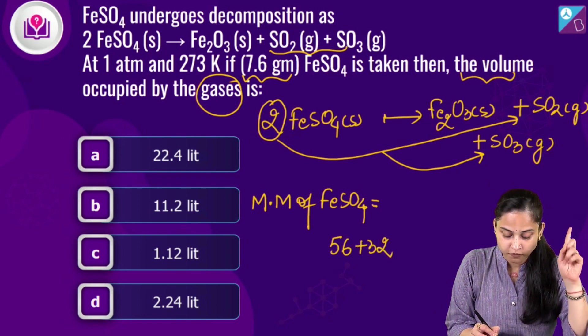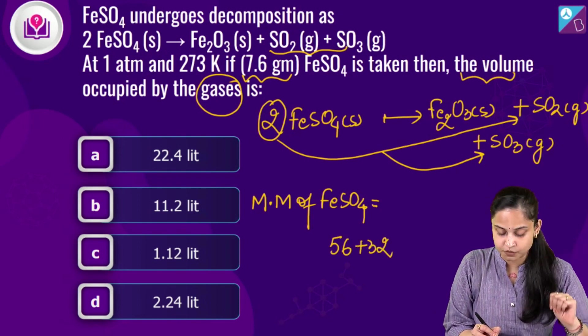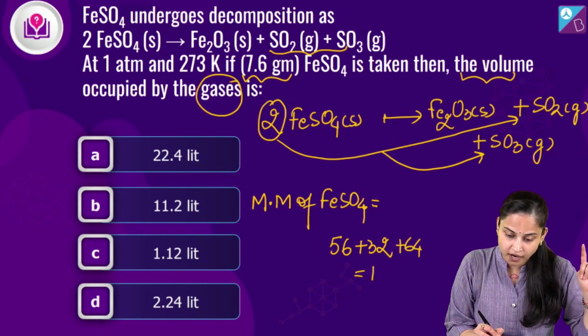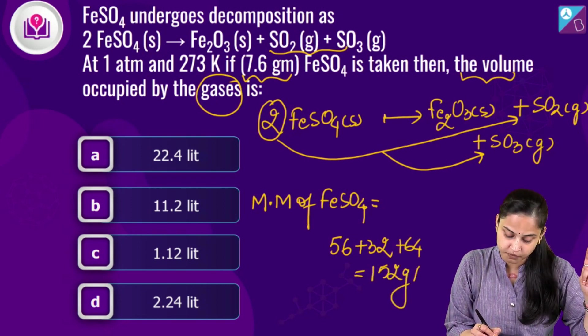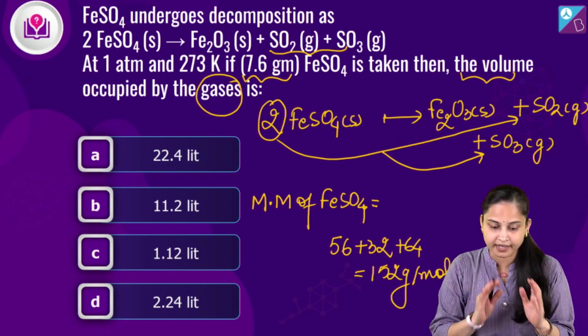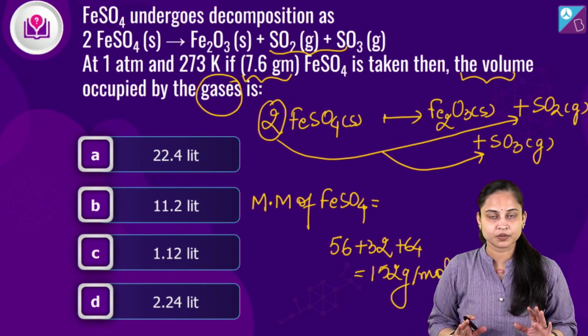And of oxygen, there are four oxygen atoms, so 16 times 4 is 64, which equals 152 grams per mole. That's absolutely right.